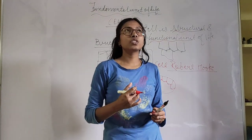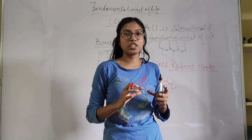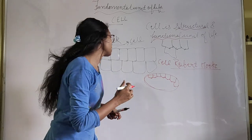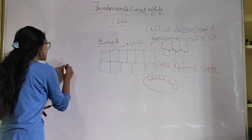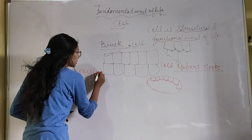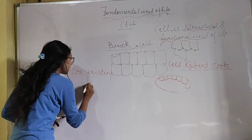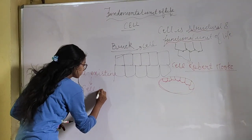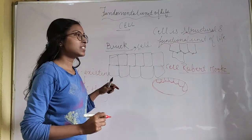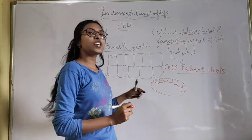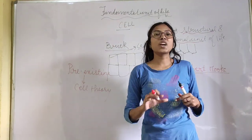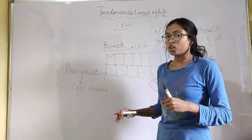There is also the cell theory. Cell theory means all cells arise from pre-existing cells — cells which were present before. It was given by Schleiden and Schwann.